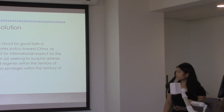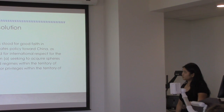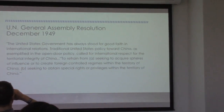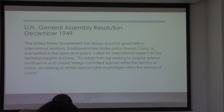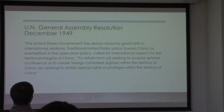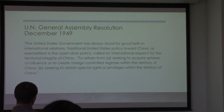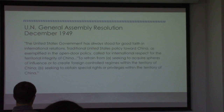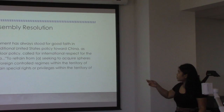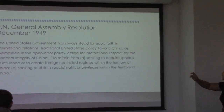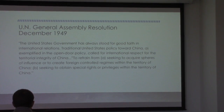The United States government has always stood for good faith in international relations. Traditionally, United States policy towards China, exemplifying the open door policy, called for international respect for the territorial integrity of China: to refrain from seeking to acquire spheres of influence or to create foreign-controlled regimes within the territory of China, and from seeking to obtain special rights or privileges within the territory of China. The first part is from Truman's press conference, but he quotes the second line from the UN General Assembly Resolution itself.